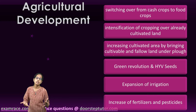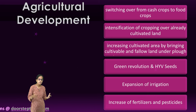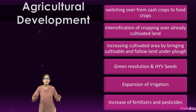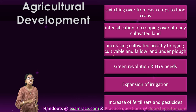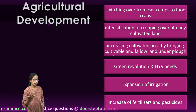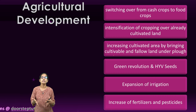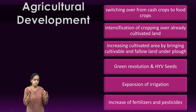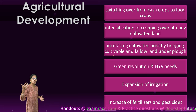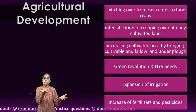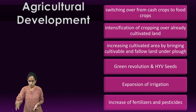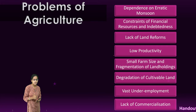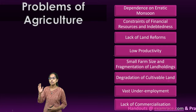With HYV seeds, chemicals, fertilizers, pesticides, and expansion of irrigation, there was a sudden boom in agricultural production. India became first in pulses, tea, jute, cattle, and milk; second in wheat, rice, and groundnuts. India achieved significant food self-reliance globally. However, major problems with agriculture still remain that need to be addressed.